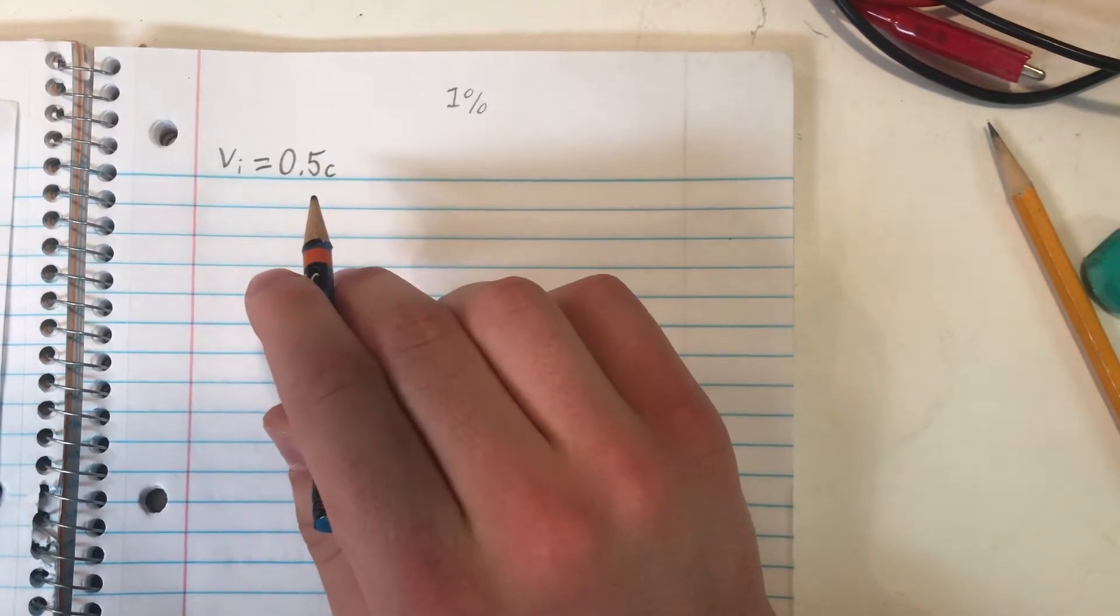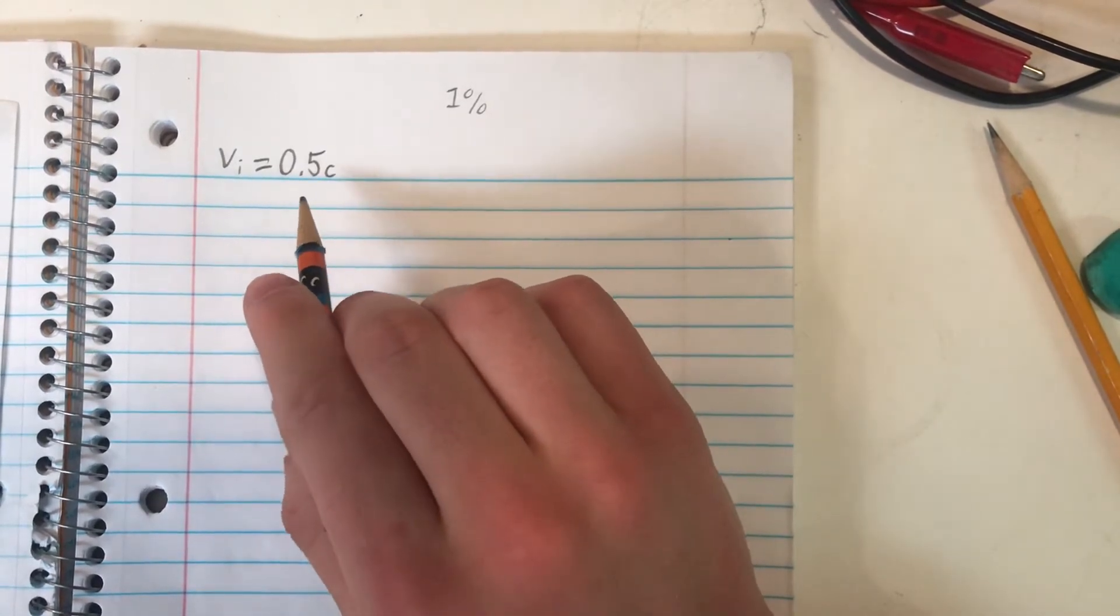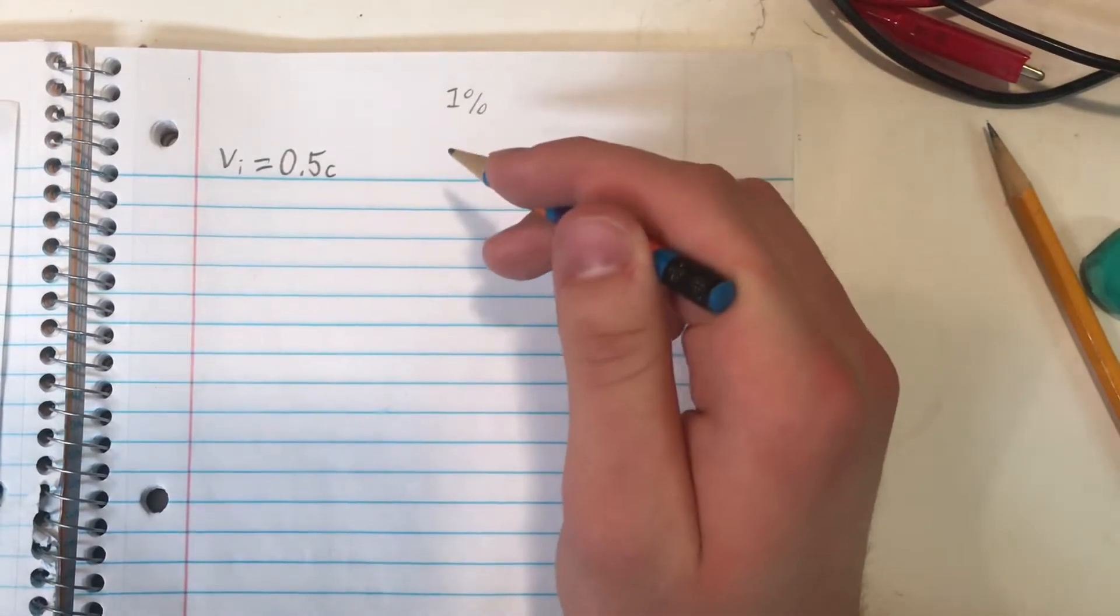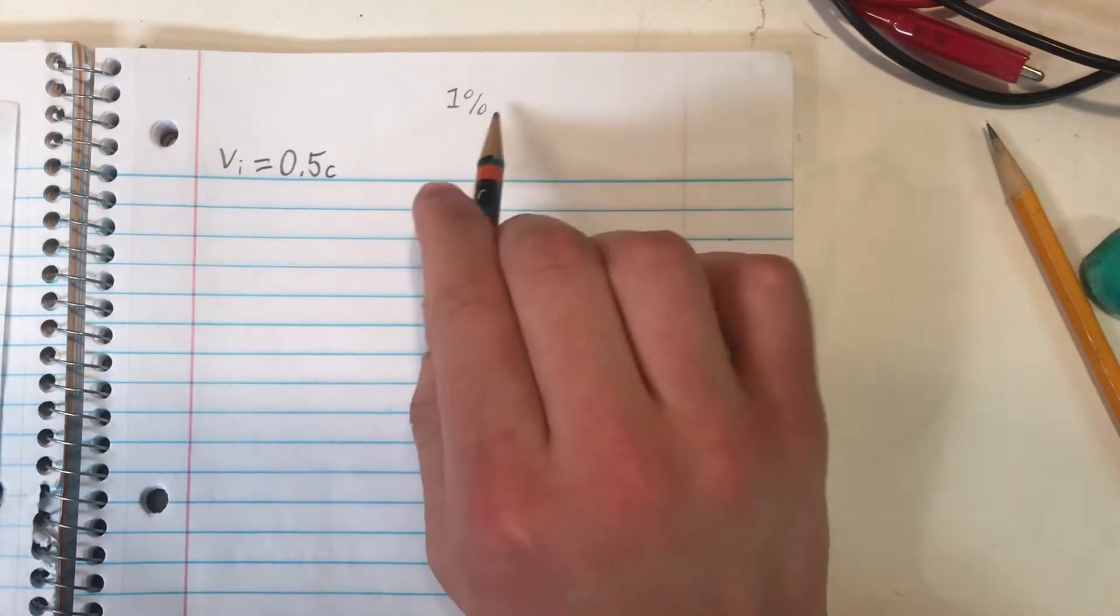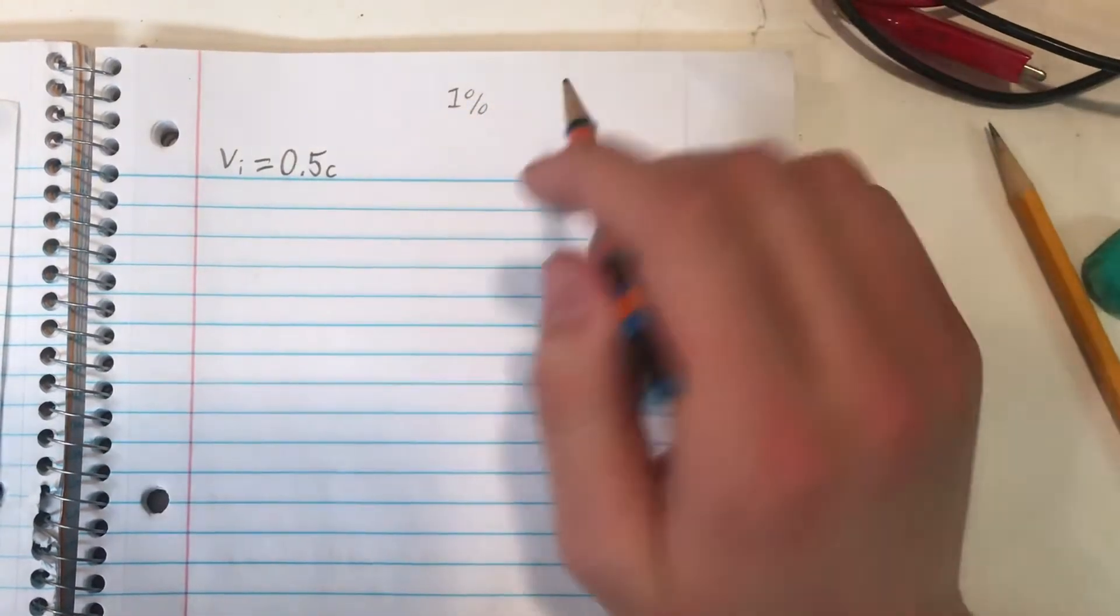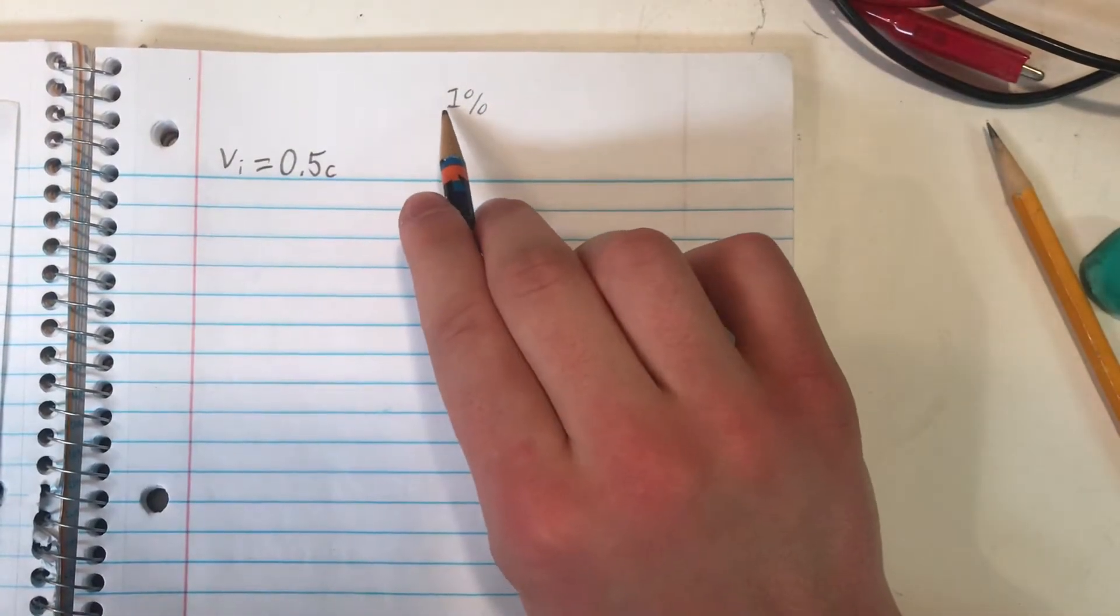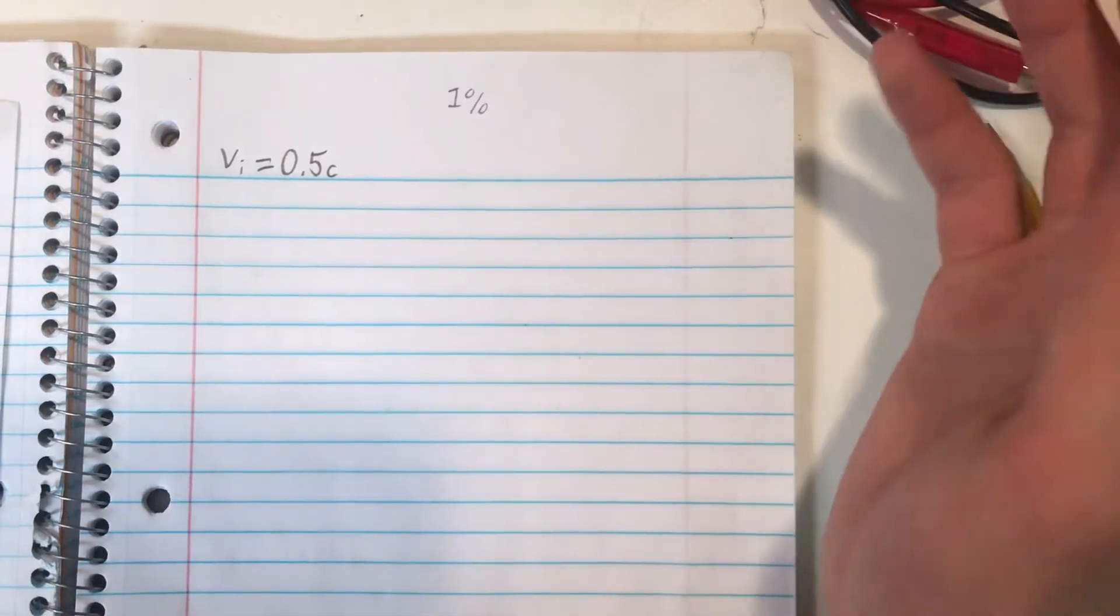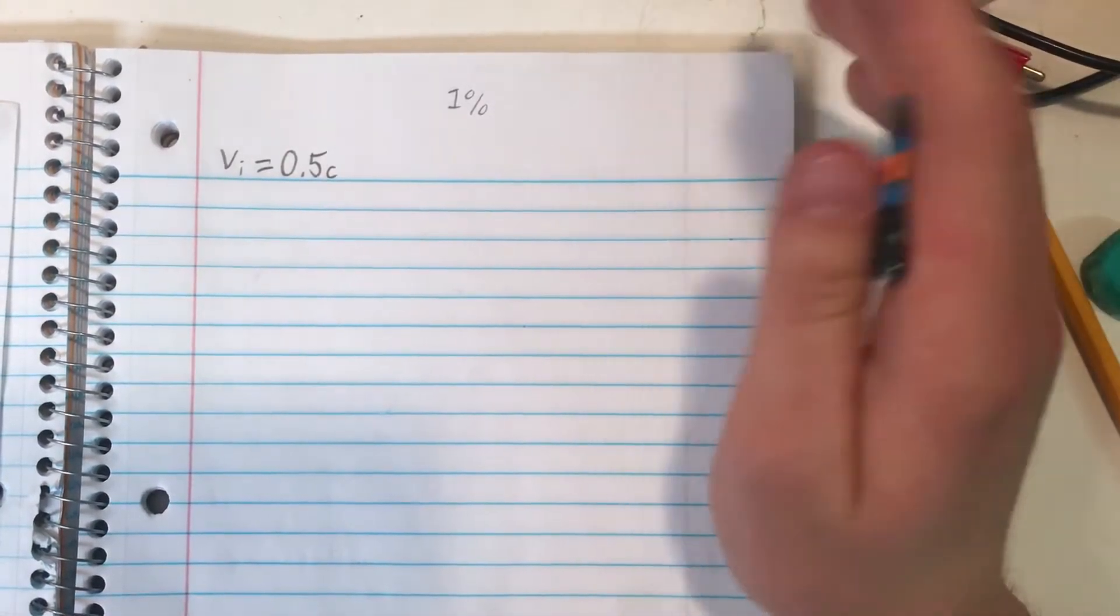Now we are asked to find the final speed that would be required of this particle, assuming a certain change in momentum. So for the sake of this problem, I'll assume we're looking for a change of momentum of 1%, though whatever method we choose should work for any percent.